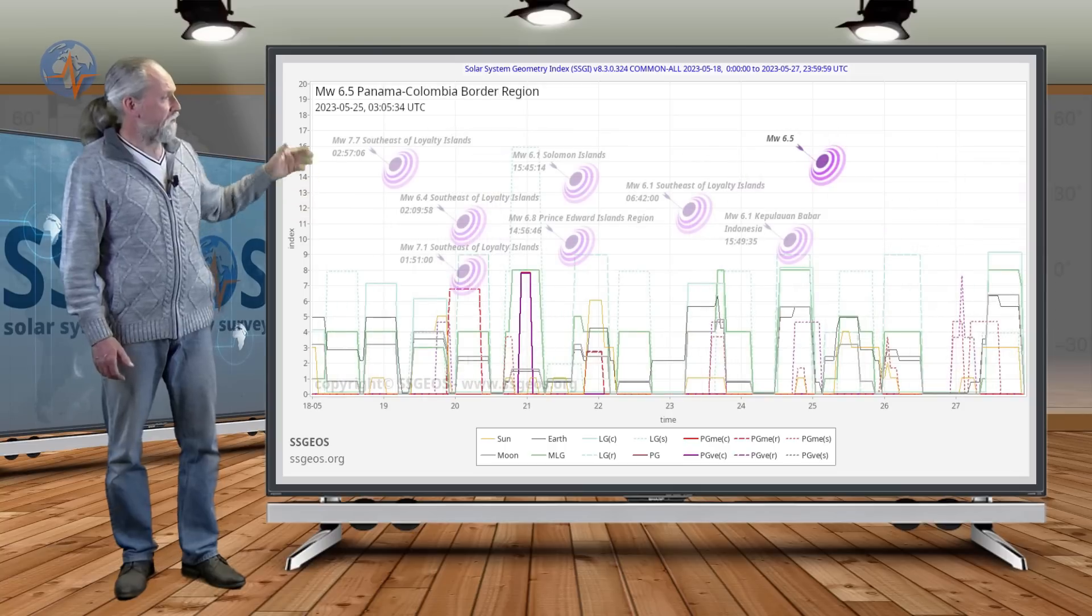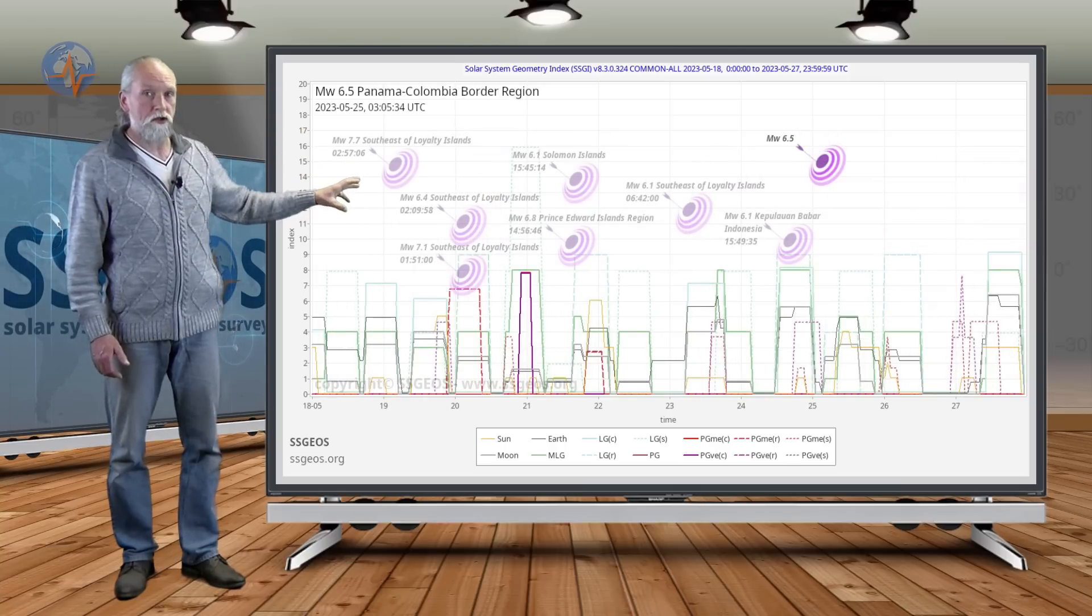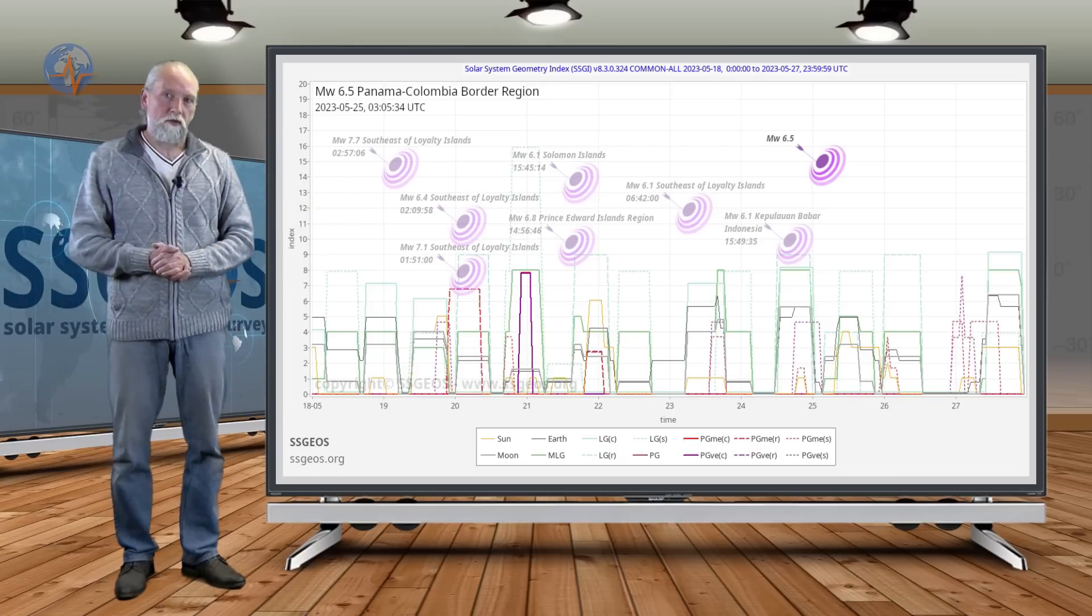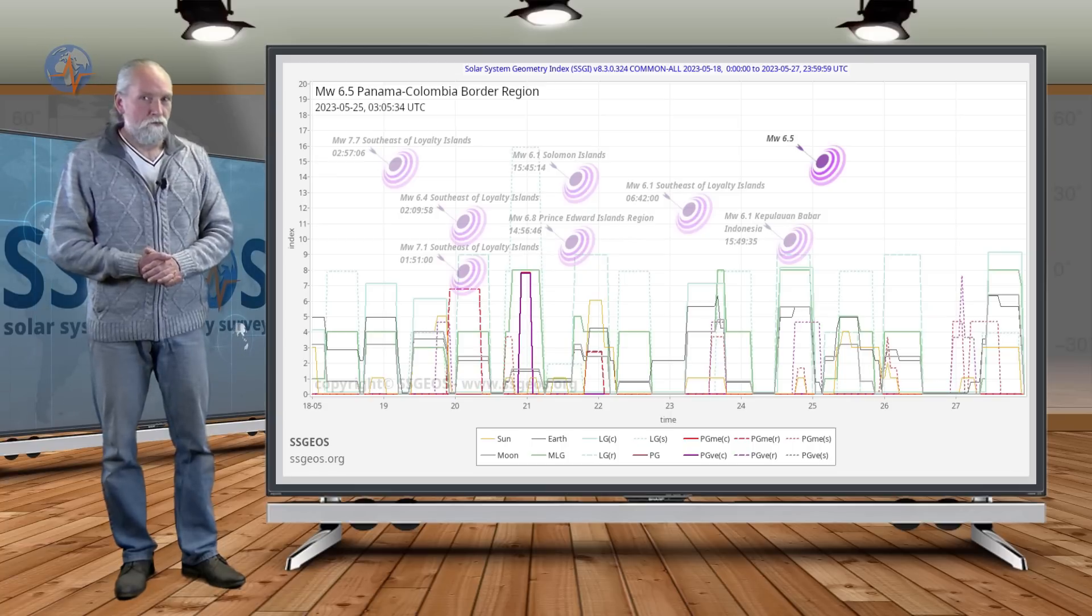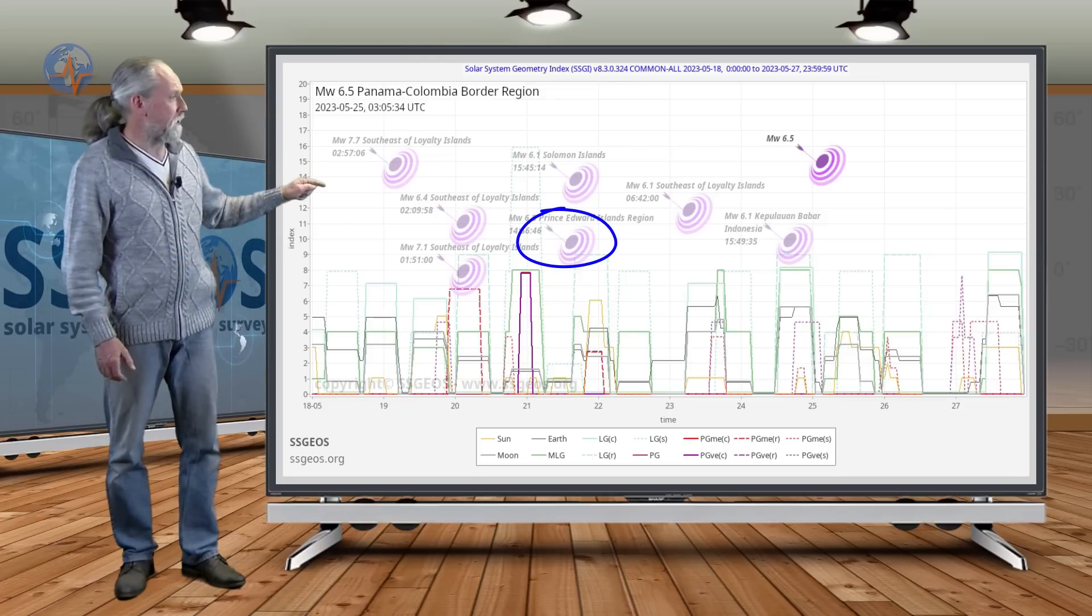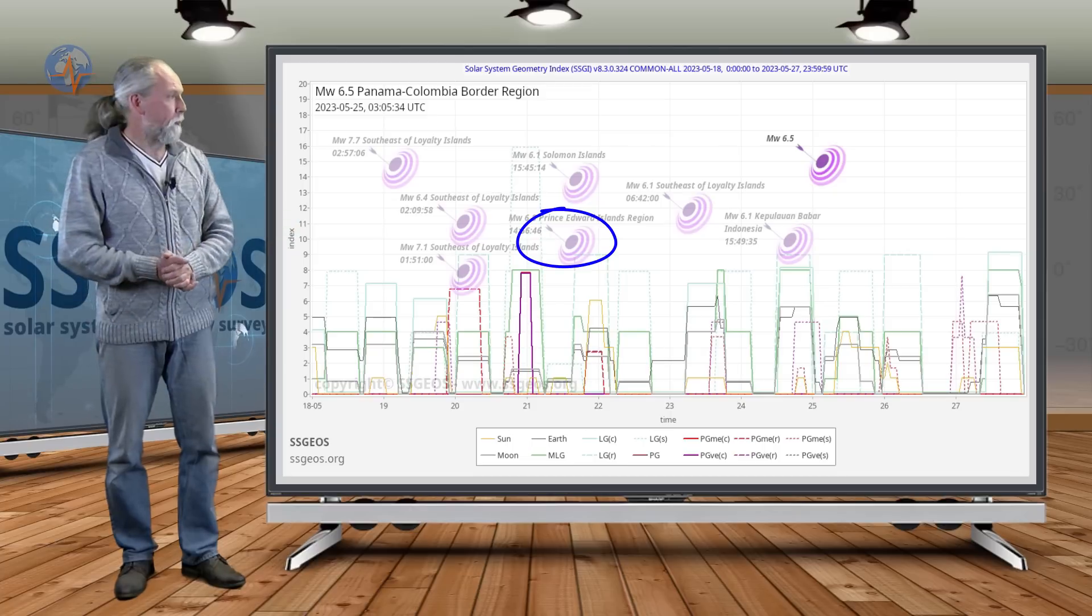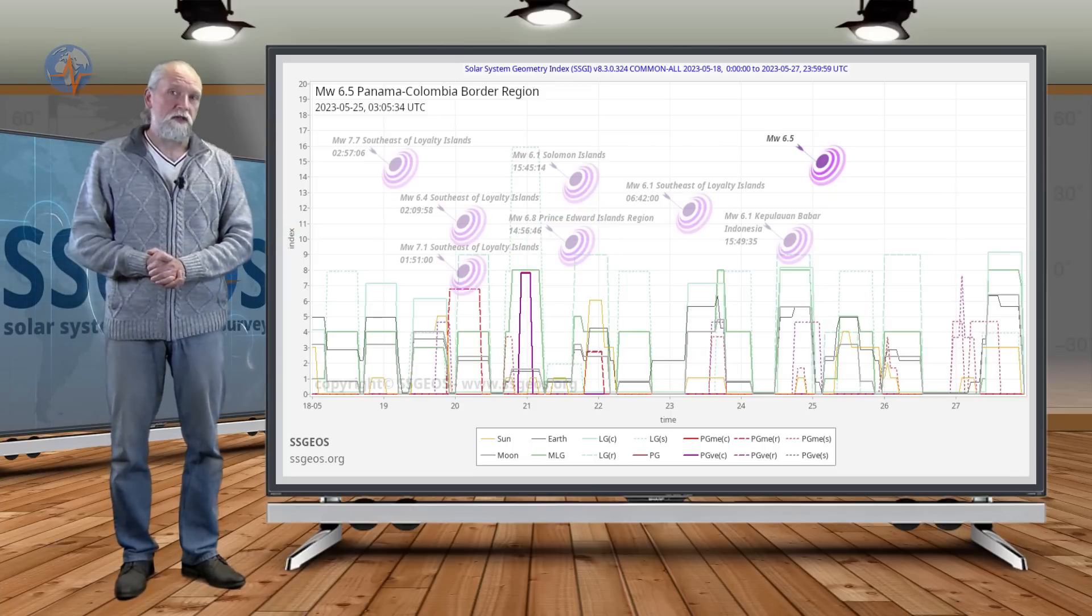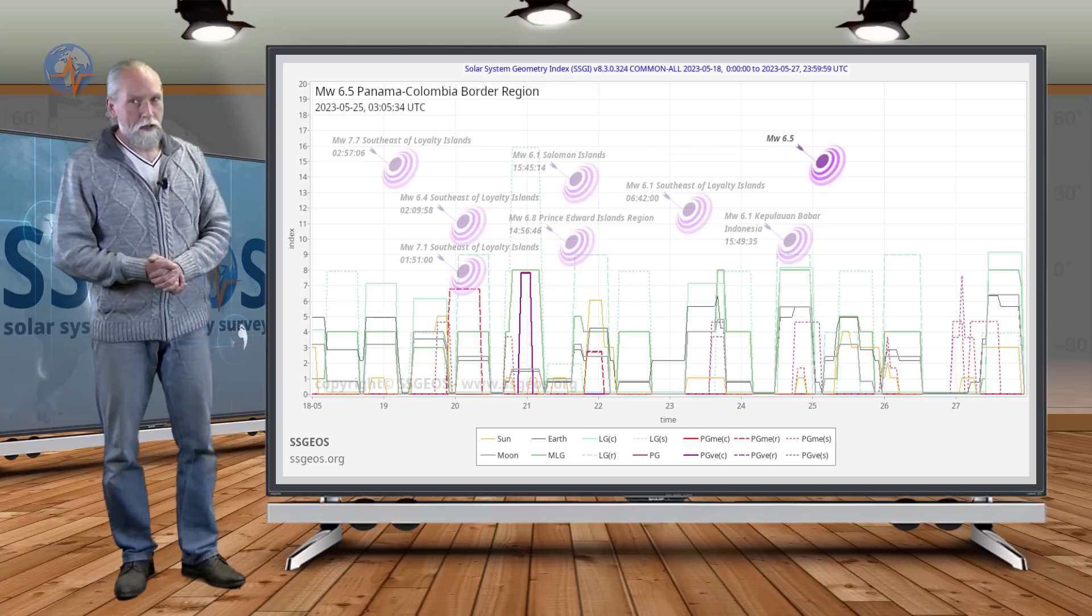And as you can see the 7.7 was followed by a series of strong earthquakes including aftershocks, but then we go to the 20th and the 21st, the critical planetary geometry that I explained in the previous forecast. Magical geometry in my opinion and it was followed by a magnitude 6.8 at the Prince Edward Islands region just south of Africa. And then we had additional strong earthquakes and even this morning a magnitude 6.5, 6.6 at the Panama-Colombia border region.